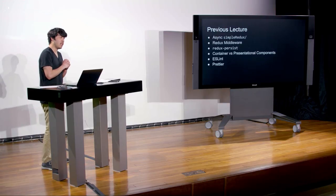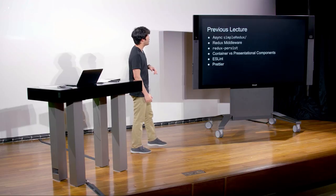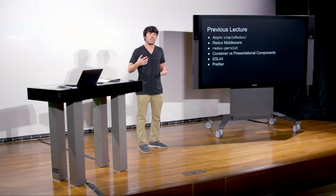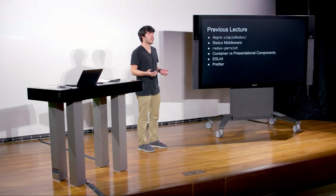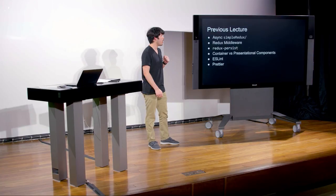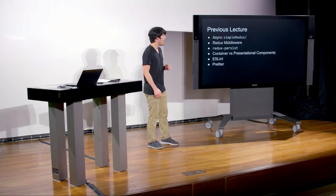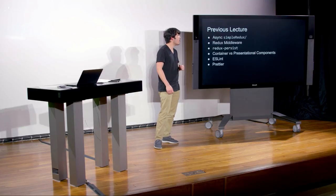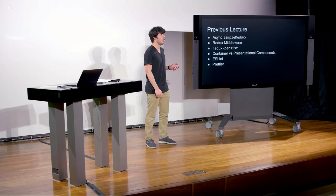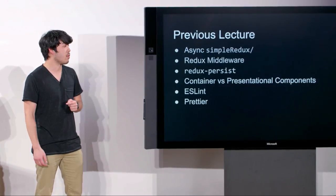In the previous lecture, we talked about a few different things. We forged ahead with our simple Redux, where we did an asynchronous action. We then saw that it might not be good to change our implementation of Redux to do that, so we found out what Redux middleware was. By using Redux middleware, we were able to add asynchronous actions to Redux itself. We also talked about Redux Persist, which allows us to store our state into whatever storage mechanism we want and then rehydrate our app based on that information.